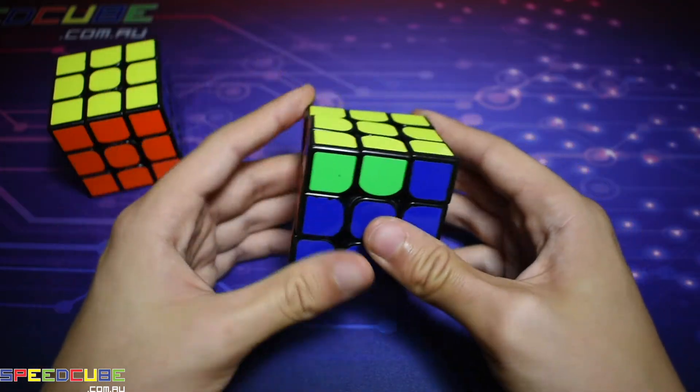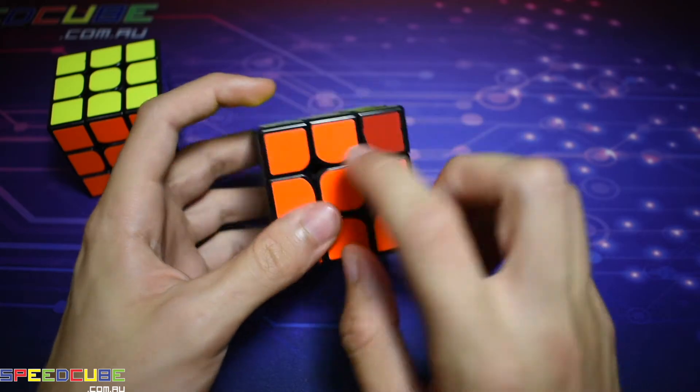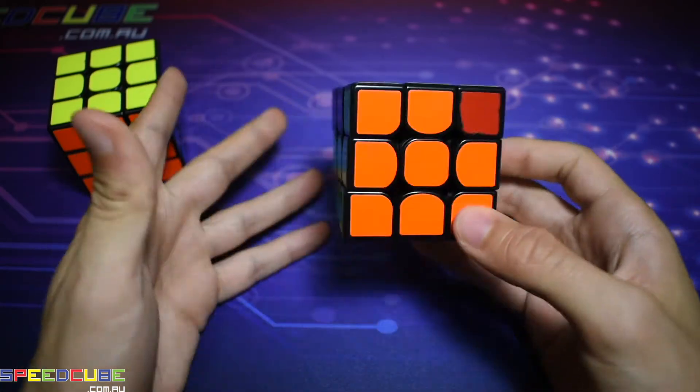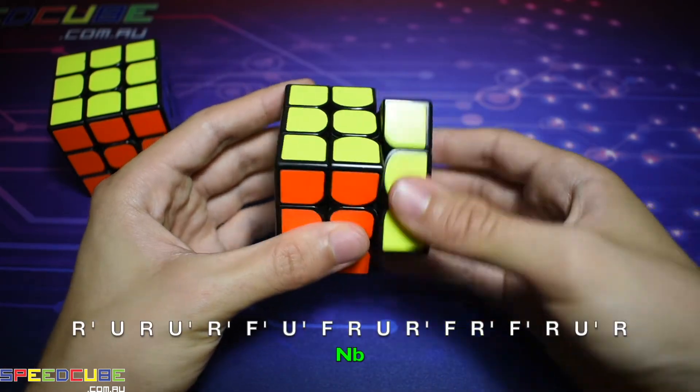Now for the other N-perm, with all the bars on the left-hand side, you want to do this algorithm from any angle: right inverted,